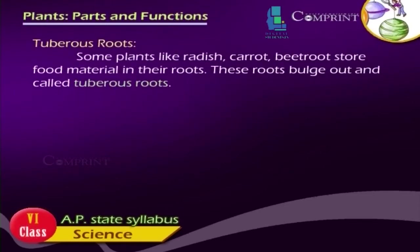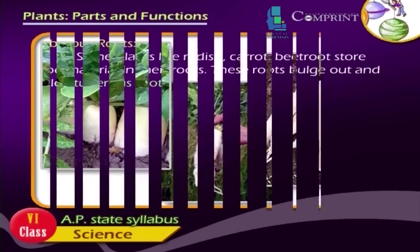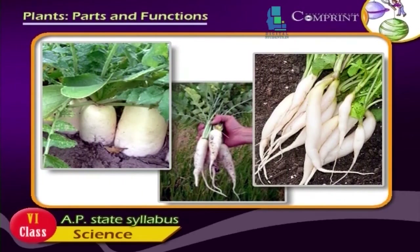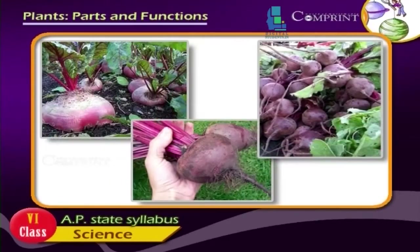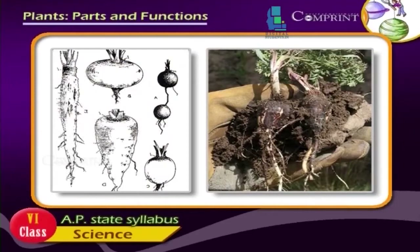Tuberous roots. Some plants like radish, carrot and beetroot store food material in their roots. These roots bulge out and are called tuberous roots.